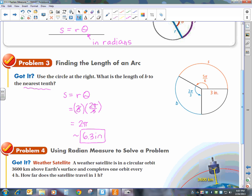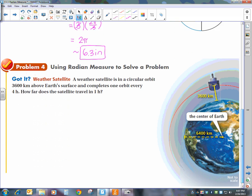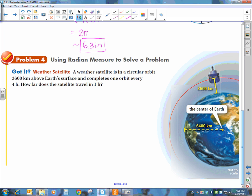And to make our lesson even more complete, we have a lovely word problem. A weather satellite is in a circular orbit 3,600 kilometers above the Earth's surface and completes one orbit every four hours. How far does it travel in one hour?